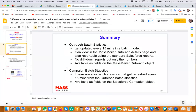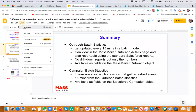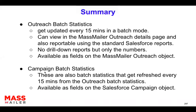Now let's talk about the campaign batch statistics. Don't get confused — when I say 'campaign' here, I mean Salesforce campaign. If you are using a Salesforce campaign to send email, we always relate the particular MassMailer outreach object with the Salesforce campaign object. They also get refreshed every 15 minutes, but it's just a copy-over from the outreach object to the Salesforce campaign object. To make it easy for customers, we also put those statistics onto the campaign object from the outreach. Those are available fields on the Salesforce campaign object, which means they are also reportable.